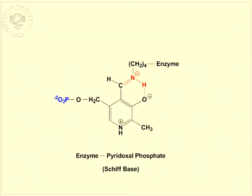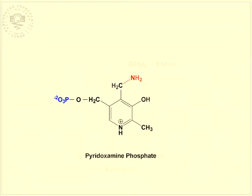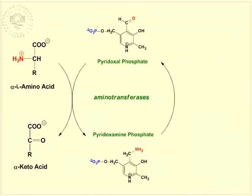The Schiff base, which is conjugated to the pyridinium ring, is the center of the coenzyme activity. When pyridoxal phosphate accepts the amino group from an amino acid, it becomes pyridoxamine phosphate. To complete the catalytic cycle, the coenzyme is converted from pyridoxamine phosphate back via a Schiff base to pyridoxal phosphate.